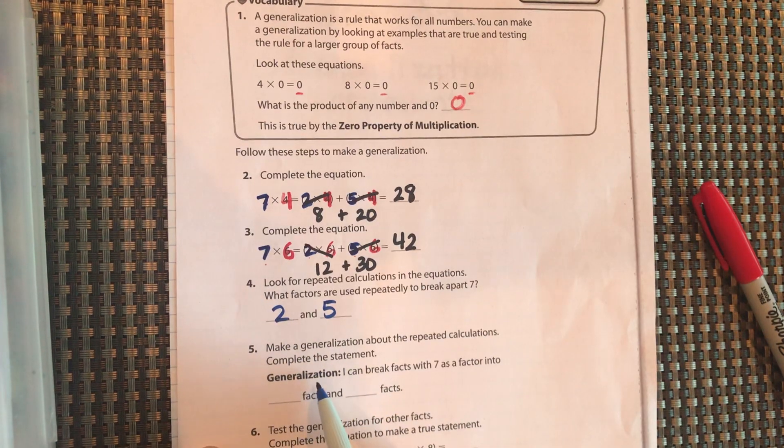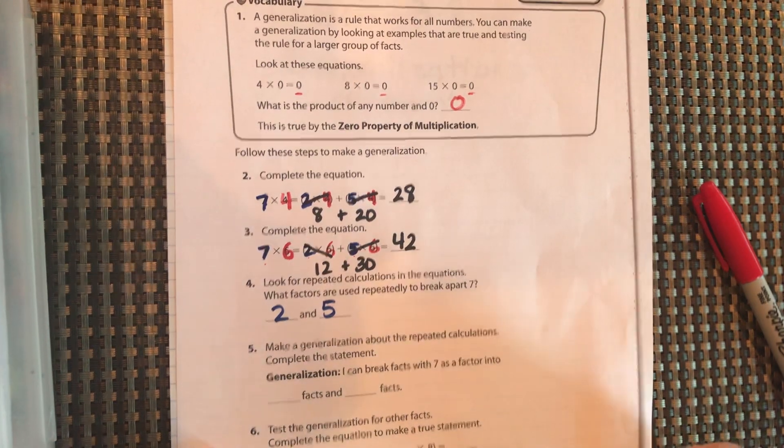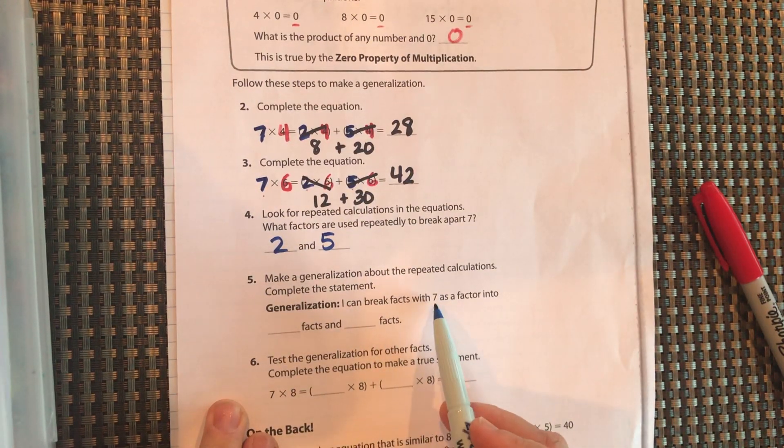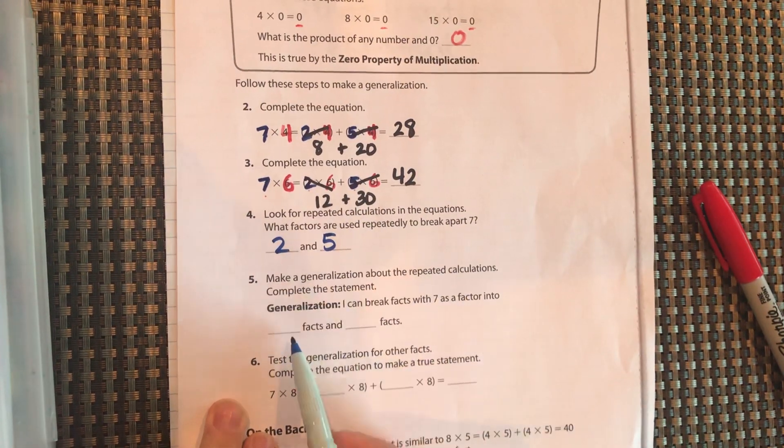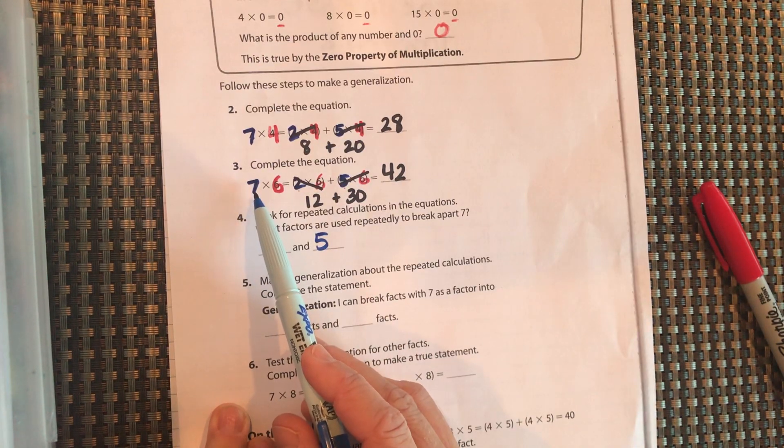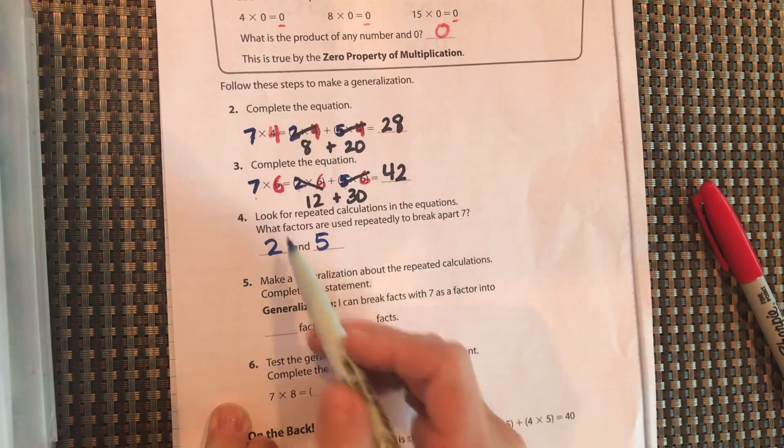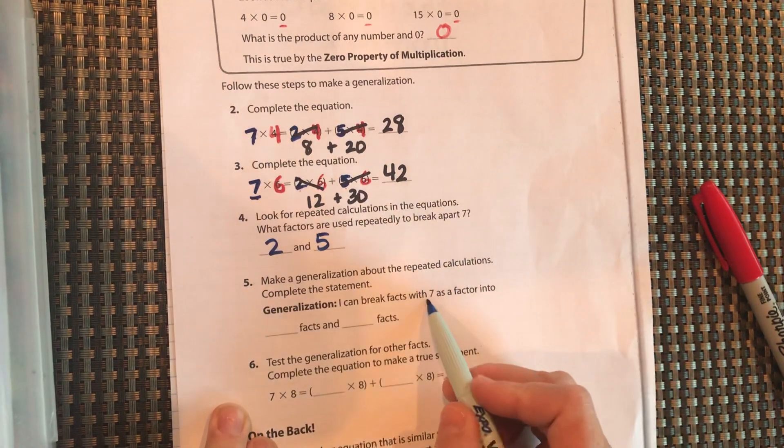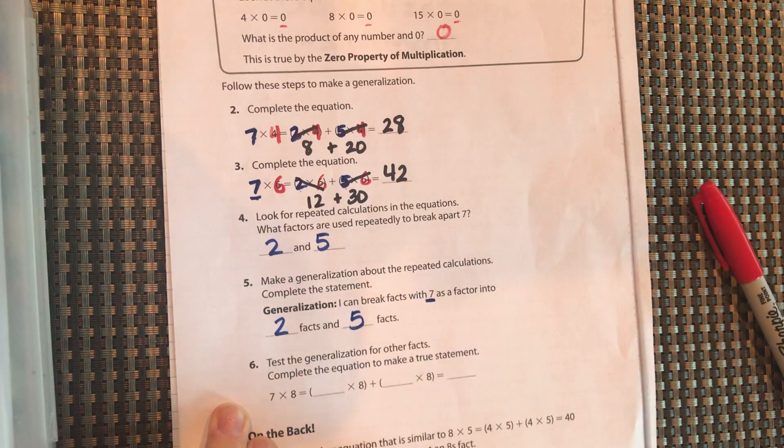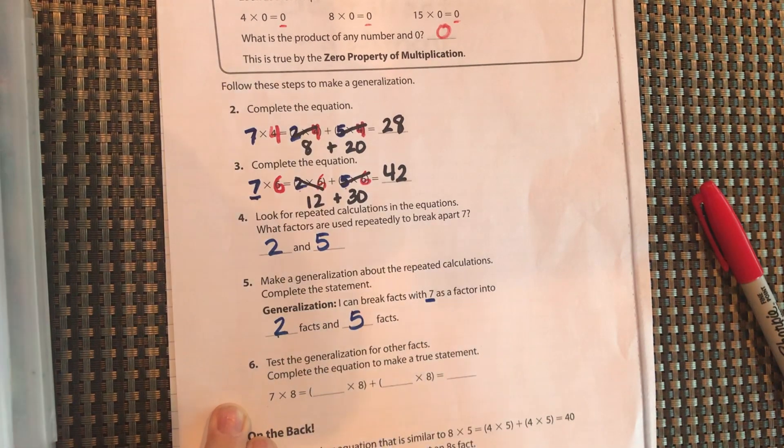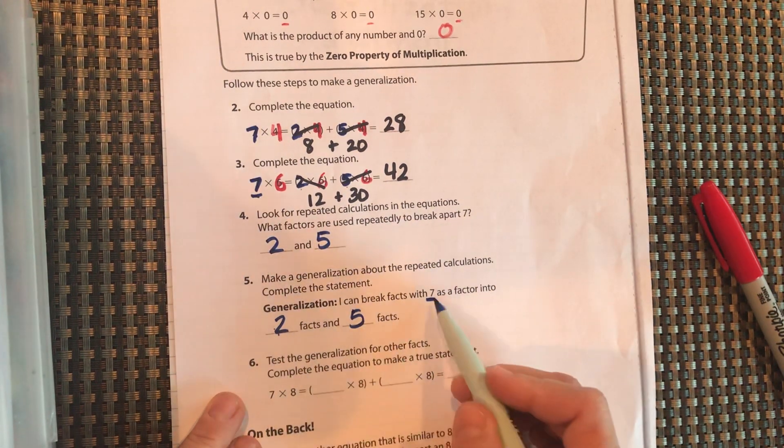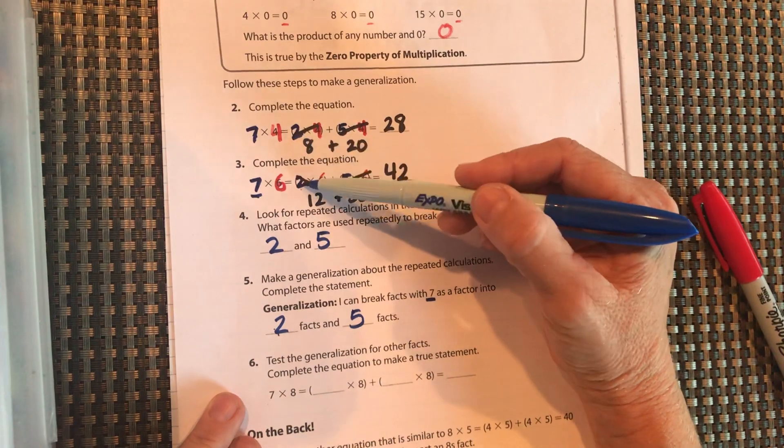So generalization or a statement we can make about that number is I can break facts with 7 as a factor into what and what. So what can you break this 7 into that will get you the same answer? If you have 7 as a factor, you can break that up into a 2 and a 5 or 5 and 2. Perfectly fine. There are other ones that would work as well, but 2 and 5 definitely. We did it repeatedly here.